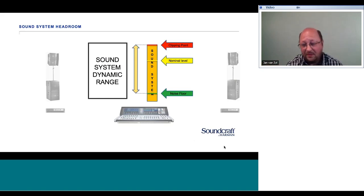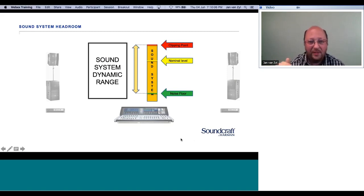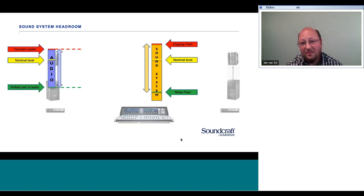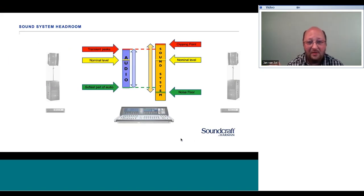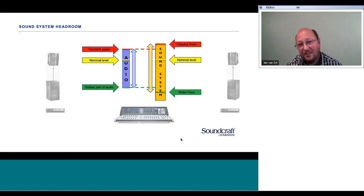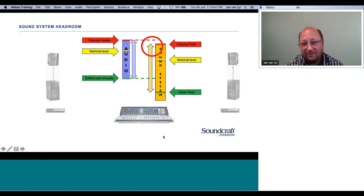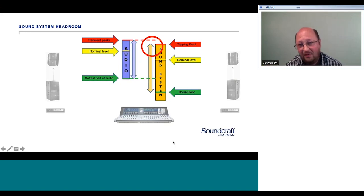We're referring to both sound system dynamic range and audio dynamic range, and we need to link the two so they fit together. On the sound system, most equipment is also designed to operate at a nominal level — on the mixer, that's typically when we reach the first yellow or amber LED. Ideally the audio dynamic range will be smaller than that of the sound system, giving us options on how loud we want to mix. If we mix too loud we get clipping; if we mix too soft the softest audio gets masked by the noise floor.